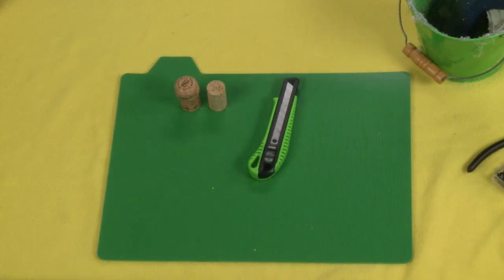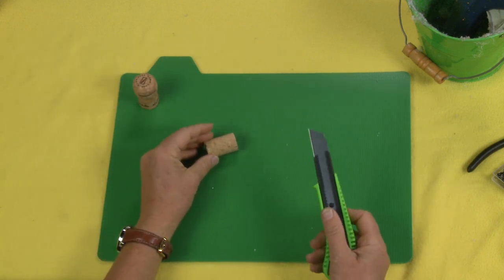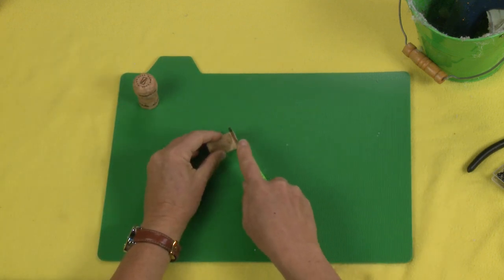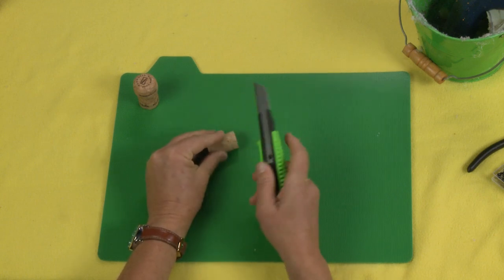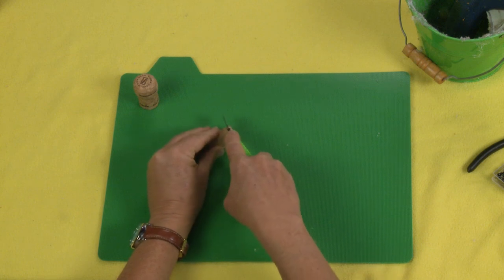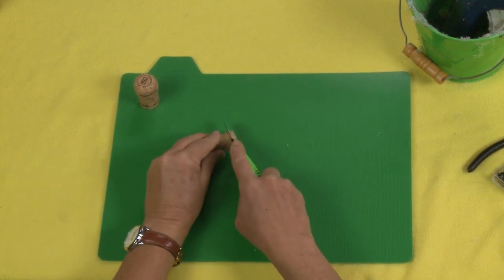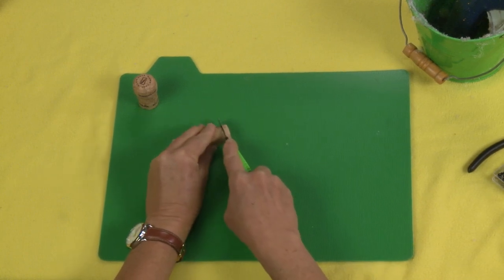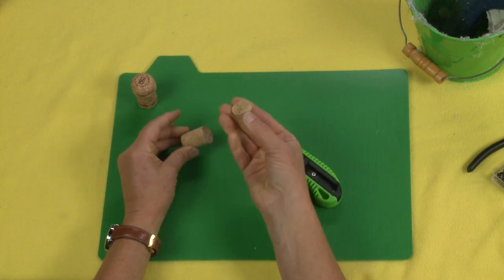The first thing we're going to do for our mouse is we're going to cut her ears. We're going to do different ears than the he-mouse, but we are going to cut the ears the same way. We're going to cut about a half an inch. Take your box cutter, pull it out. Be very careful when you do this, but you're just going to kind of gently rock back and forth, making your way through the cork, just like that.